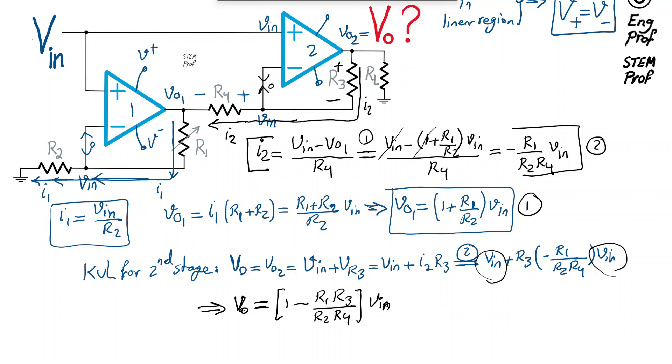In summary, that's how output voltage is related to input, or basically, we can write the voltage gain of this staggered op-amp amplifier is simply Vout over V-in, which is 1 minus R1 R3 divided by R2 R4.